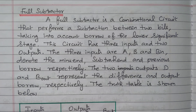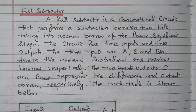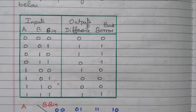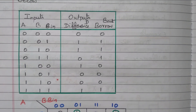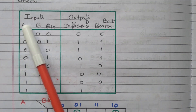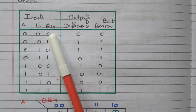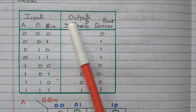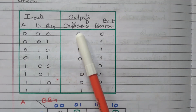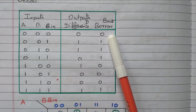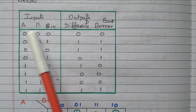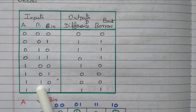Now we will see the truth table of the full subtractor. The inputs are A, B, and Borrow-In, and there are two outputs: difference and Borrow-Out. Because of three inputs, there are eight combinations available.